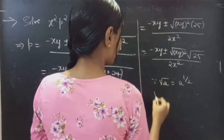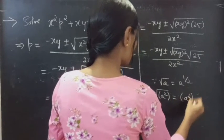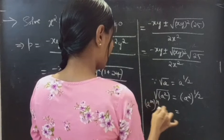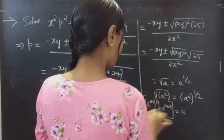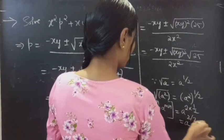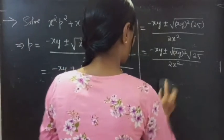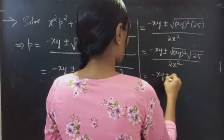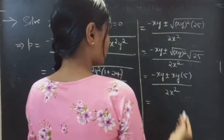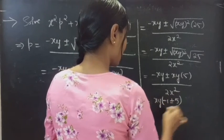Since 1 plus 24 is 25, we have square root of x²y² times 25 over 2x squared. We can write x²y² as (xy)² whole square, so the square root of (xy)² is simply xy. This gives minus xy plus or minus xy times 5, all over 2x squared.